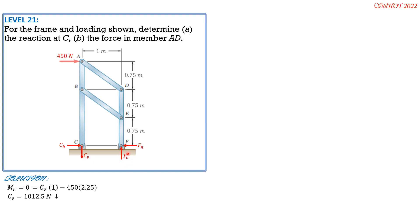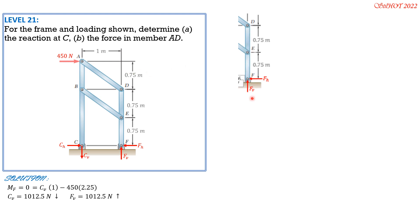The vertical reaction at F is upward and equals 1012.5 Newtons. We now draw the FBD of this portion, assuming FAD is in compression and FBE is in tension. Extending the lines of action of these two two-force members, we are interested in FAD because it is required. The lines of action of FBE and FH meet at G1.